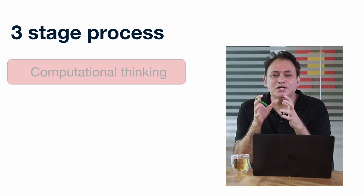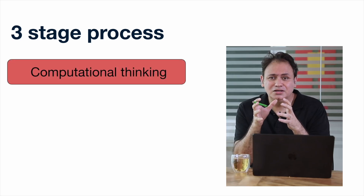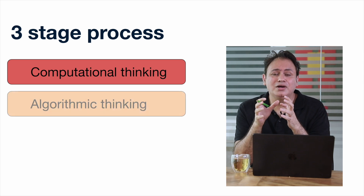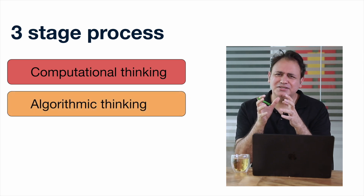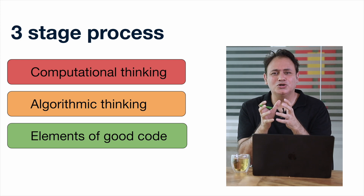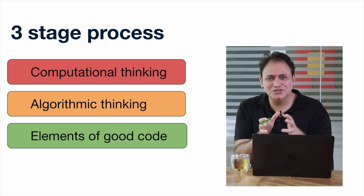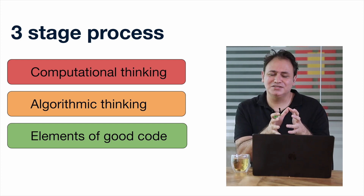So you can think of this as a three-stage process. Stage one: computational thinking. Stage two: algorithmic thinking. And stage three is writing good code. So that's your three-stage process that you need to think about.